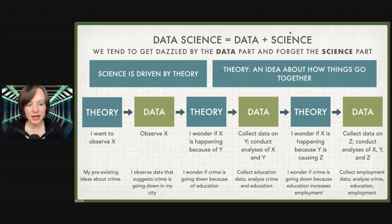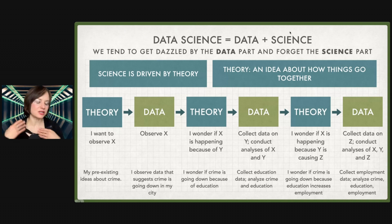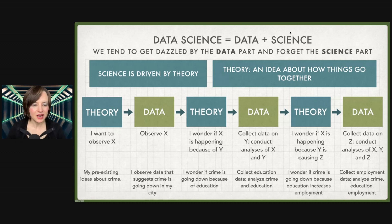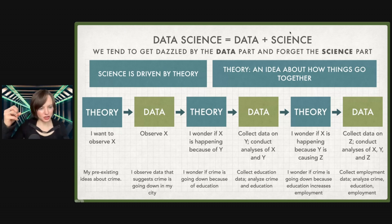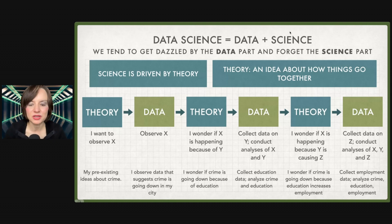Science is driven by theory — an idea about how things go together. So when you're looking at a data set, you are working with a theory even if you don't realize it. To give one example: I want to understand crime in my city. My theory might be that I have some pre-existing ideas about crime and I'm interested in finding out if it's getting better or worse in my hometown. I'll do my observational study, and I observe data that says crime is going down in my city. Then I ask, why would that be? One theory: maybe it's because of access to education. If that's the case, I would need data on education. I'll combine that with crime data and see what the relationship is. Suppose I find that more education is associated with less crime. Then I'll ask, what is it about education that's reducing crime? I wonder if crime is going down because education increases employment. Then I might collect employment data and analyze crime, education, employment, et cetera.